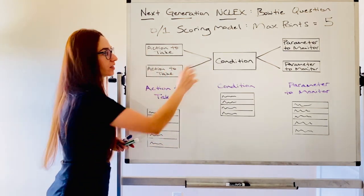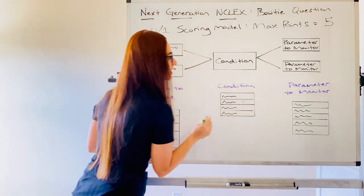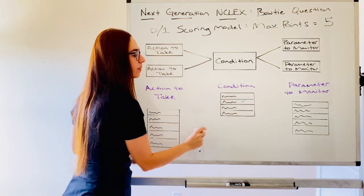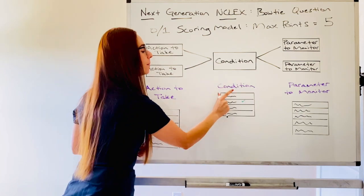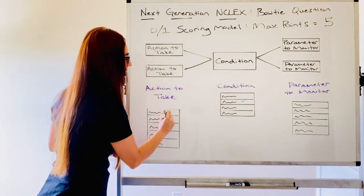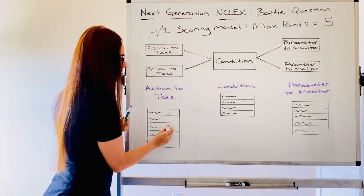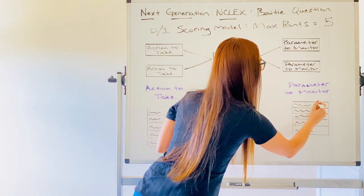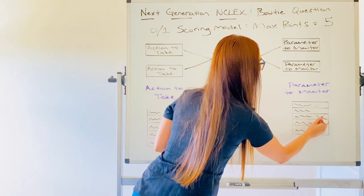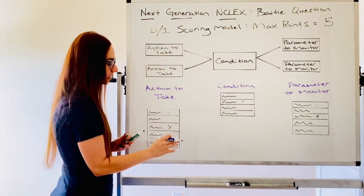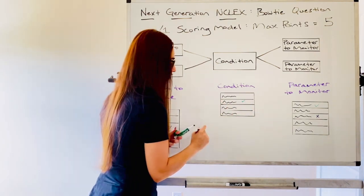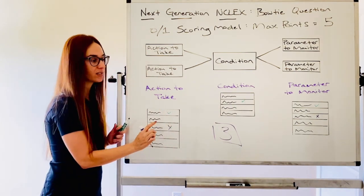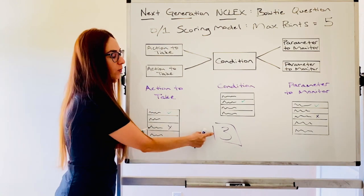So I'll give you an example. You saw your scenario, you pick the condition and you actually pick the correct condition. Based upon this condition, I would take as a nurse, this action. And let's say you picked this other action to fill your action boxes, but it was wrong. And then based upon your actions, you decided to observe or continue to monitor this parameter and you chose this parameter, but that was wrong. Remember, five separate tokens. So altogether, if you picked these answer choices, you would get a total of three points for this question. You picked the right condition, you only picked one correct action to take, and you only picked one parameter to monitor.